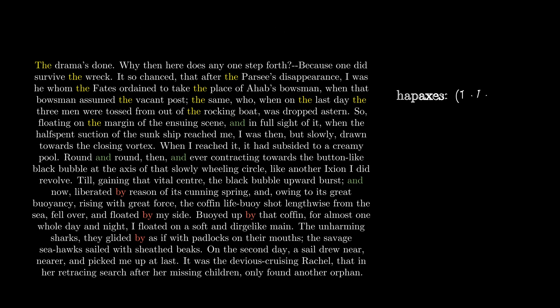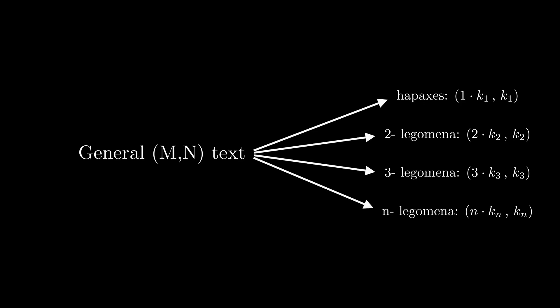Observe that any text is simply a mix of texts with uniform type token distribution. Put all hapexes in one group, dislegomena to another, and so on. Label these types as k0, k1, and so on. In other words, a general text is a mix of nkn, kn subtexts.